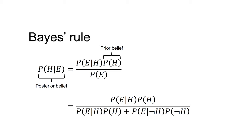Under this framing, Bayes' rule is formulated as follows: the probability of the hypothesis given the event — that is our posterior belief — equals the probability of the event given the hypothesis times the probability of the hypothesis (our prior belief), divided by the probability of the event, which equals the probability of the event given the hypothesis times the probability of the hypothesis, plus the probability of the event given the hypothesis not being true, times the probability of the hypothesis not being true.